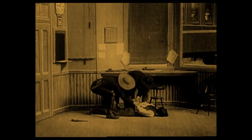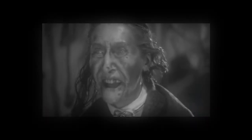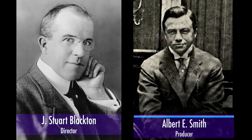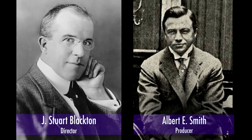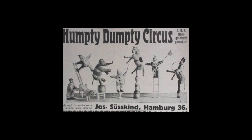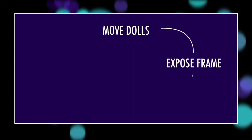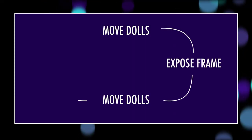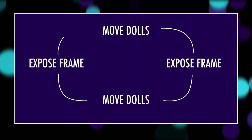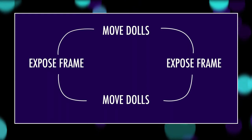Visual effects started early in the film industry — real early. In 1898, J. Stewart Blackton and Albert E. Smith began using a new effect for the now-lost Humpty Dumpty Circus. The process was simple: set up some toy dolls, expose the image onto a single frame of film, move the dolls slightly, expose, and repeat over and over. The idea was to create the illusion of motion. In the process, stop motion was born.